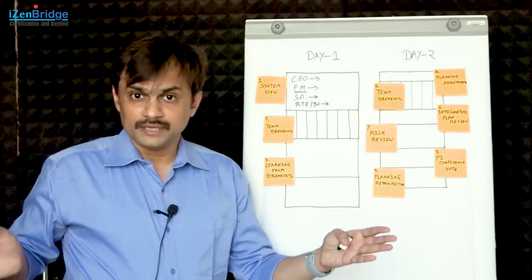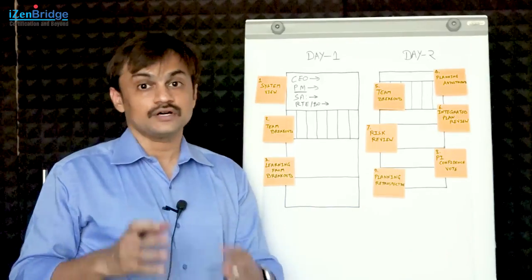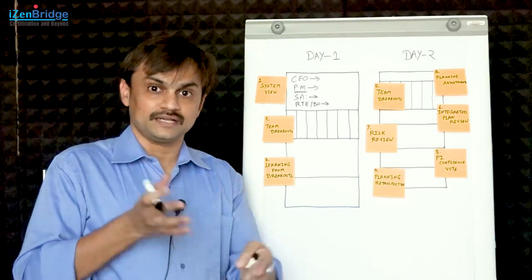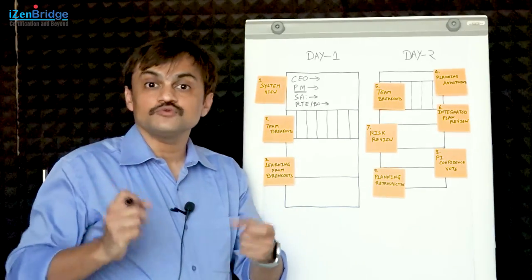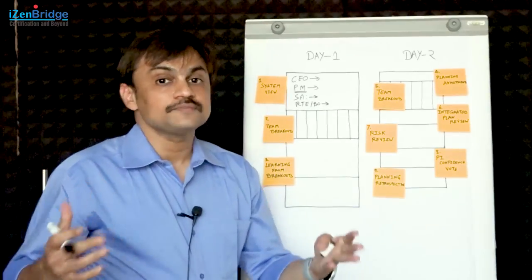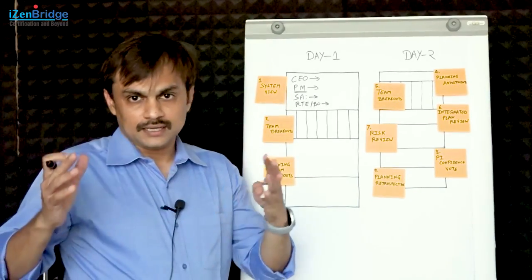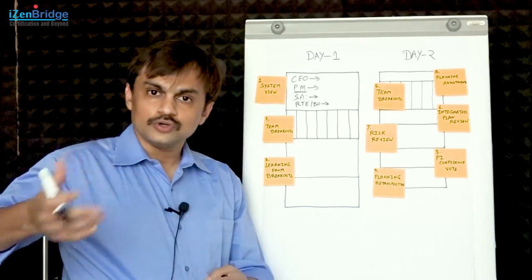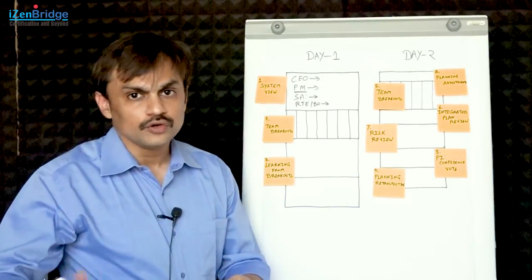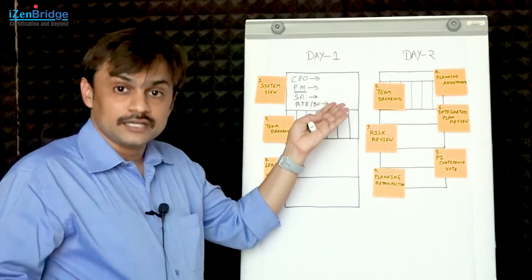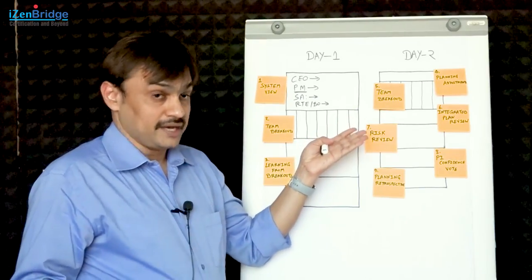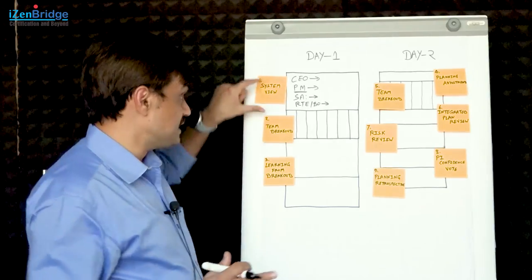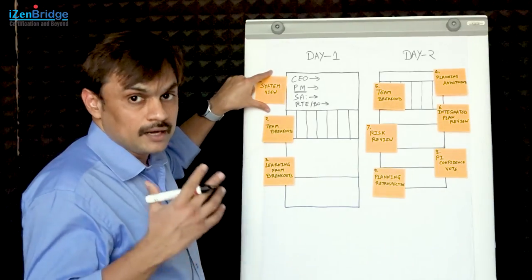In the previous program increment, you did something, there were some retrospectives done, and at the end of a PI you had an inspect and adapt, and based on that you picked up some items which you want to work on in this particular PI. There are improvement items - maybe a different way of doing things, some new guidelines for doing development, new guidelines for integrating your work. Those improvement backlog items which are planned for this particular PI may also get discussed in the initial system view of setting up the stage for the whole PI planning.